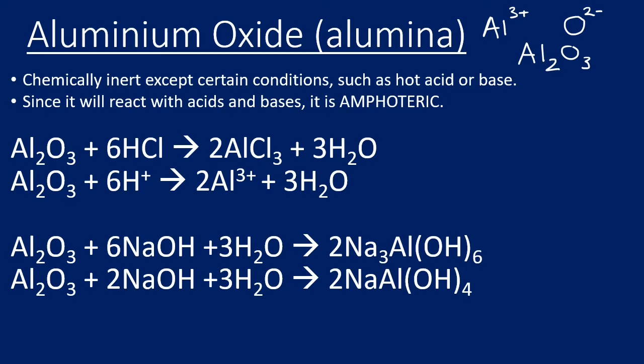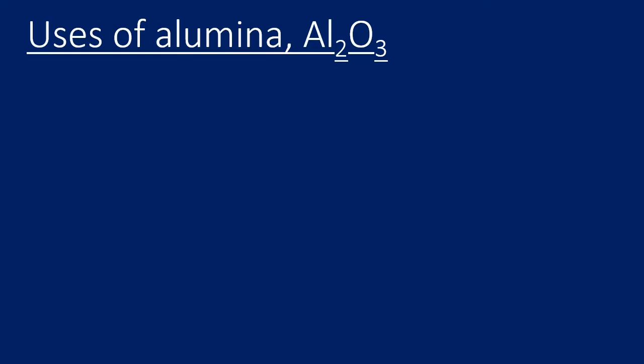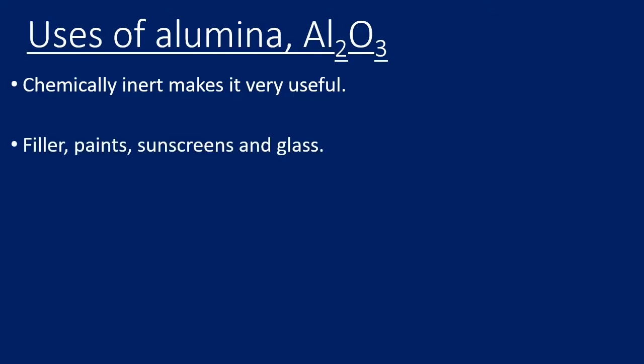Finally, we will look at some uses of alumina. Now it's chemically inert, which means unreactive, and therefore that makes it very useful. It's used a lot in fillers, paints, sunscreens, and glass.